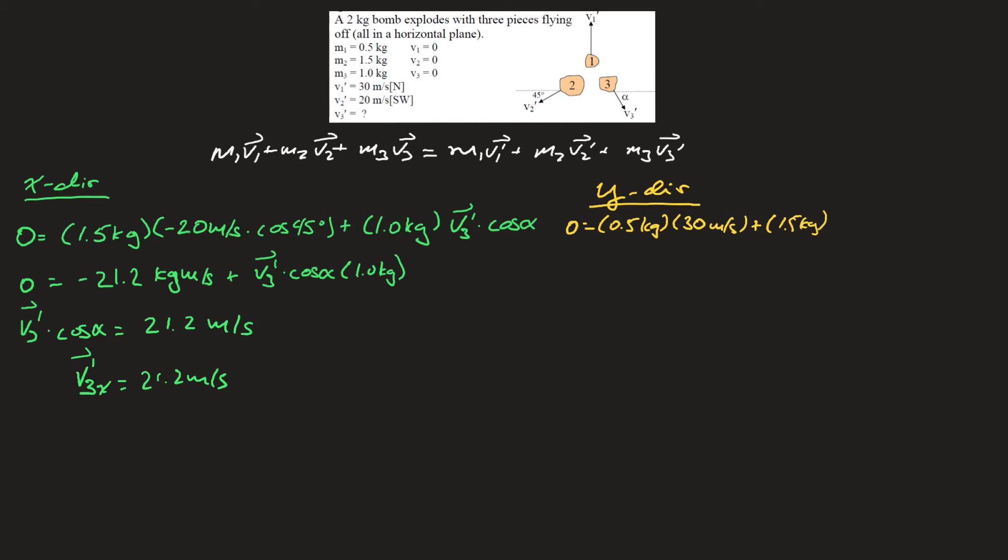Plus mass number 2, 1.5 kilograms. This is in the negative y direction, so times negative 20 meters per second times sine 45.